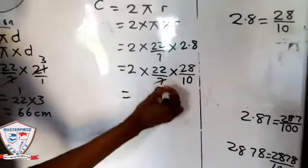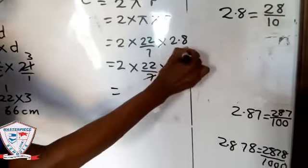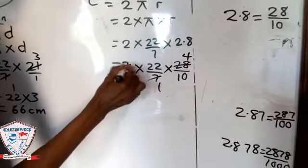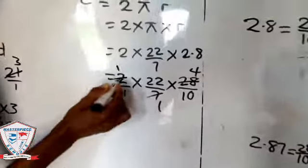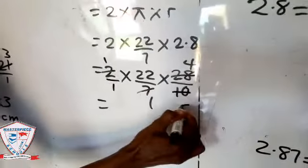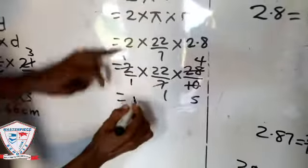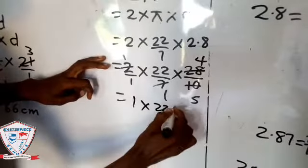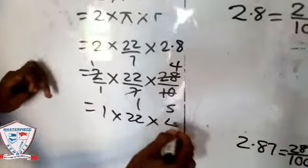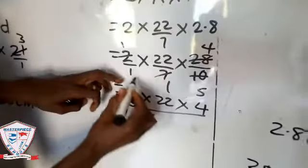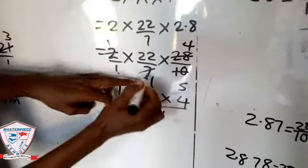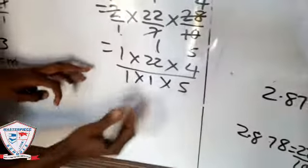Then you continue: 7 here, 1 here. 7 in 28 is 4. So you can say 2 here, 1. Don't forget this is 1. 2 here, 1. 2 in 10 is 5. So what you now have is 1 × 22 × 4 all over 1 × 1 × 1 × 5.